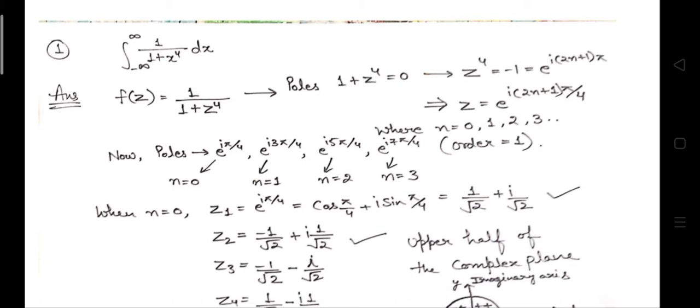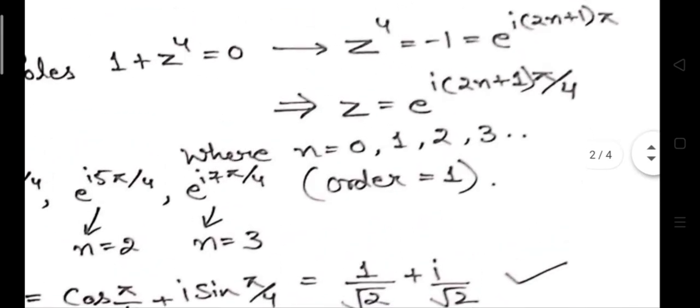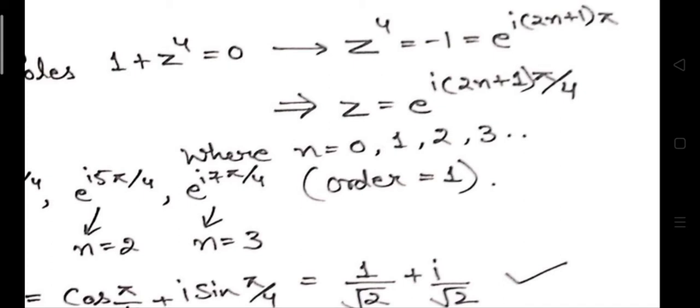When you remove the power 4 from the left-hand side, the expression on the right-hand side becomes Z equals e to the power iota times (2n+1) pi by 4, because removing the fourth power gives you 1/4 on the right-hand side. You then need to consider n equal to 0, 1, 2, 3, and so on.